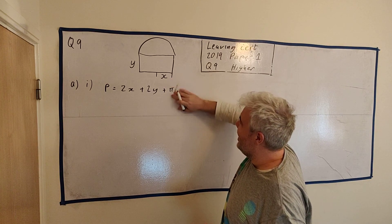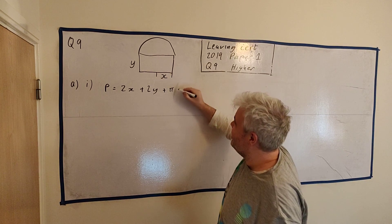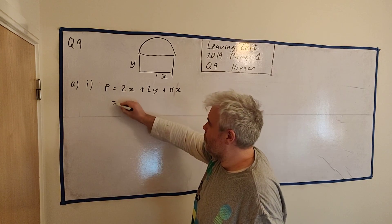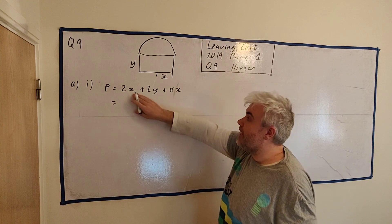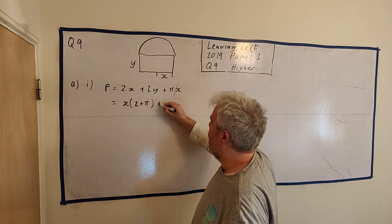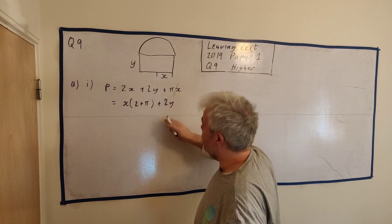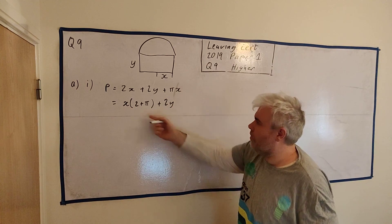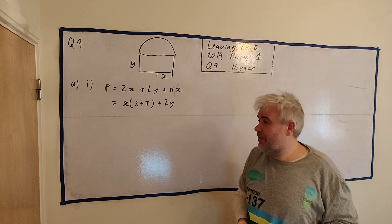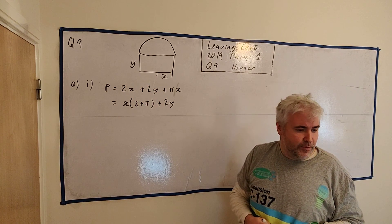That answer is pretty much good enough. I might like to take the x out of two of the terms. So we have x(2 + π) + 2y. You can take the two out, oh no, sorry, there's no two with the x there. Either of these answers will be perfectly acceptable.